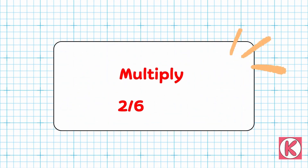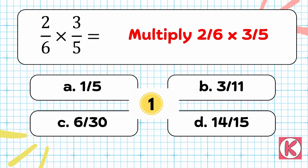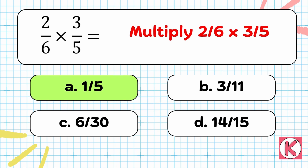Next question. Multiply 2 by 6, multiply 3 by 5. Right answer: Option A — 1 by 5.